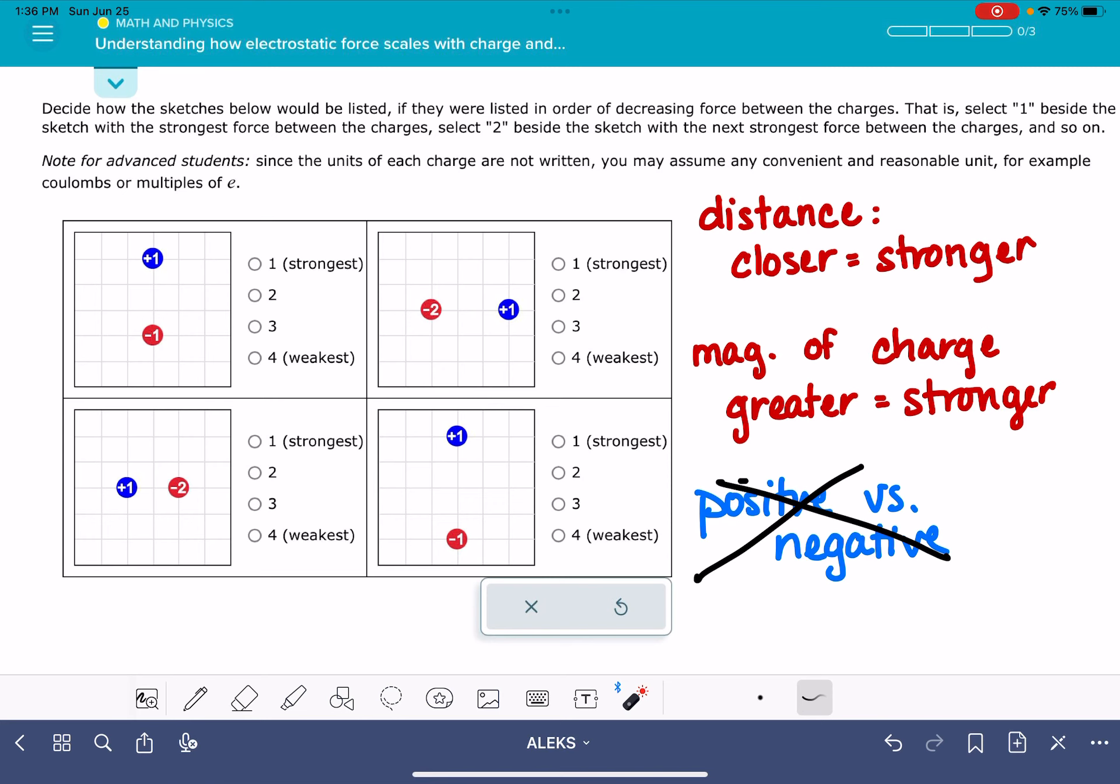So for these, I think it's helpful to start by identifying the distance between the charges. We've got this grid on here that's going to help us identify how far away the charges are from each other. We don't need to know what the unit is, we just need to know the distance between them. So I'm just going through and counting the distance between all of these charges.